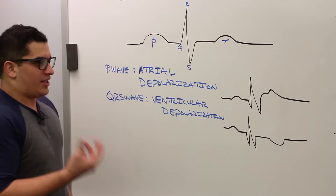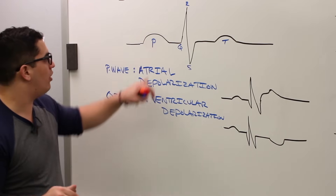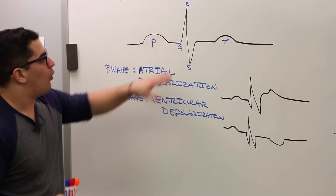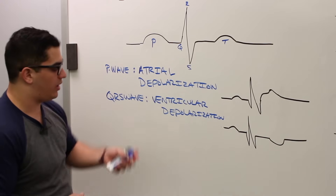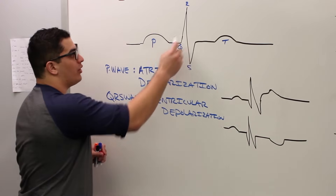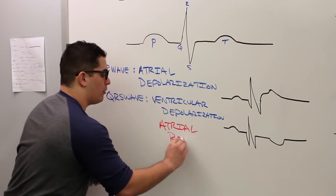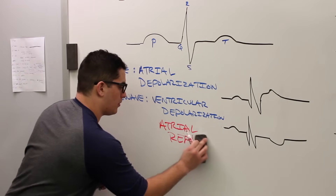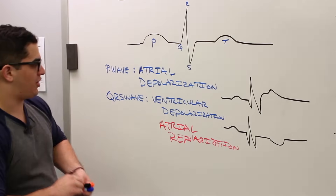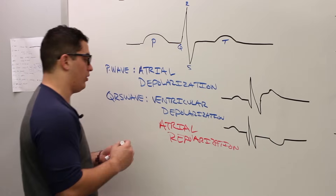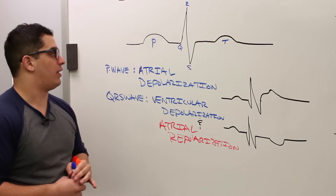Cells need to go through a relaxation period — they need to depolarize and then repolarize so they can be excited again. You might notice we didn't mention atrial repolarization. Atrial repolarization is hidden or masked within this QRS complex. So within the QRS wave, there is both a hidden atrial repolarization and ventricular depolarization occurring. You can't see the atrial repolarization because it's masked by the positive-negative deflection points within the QRS wave.